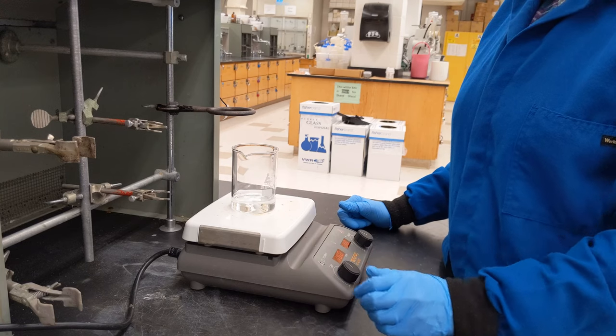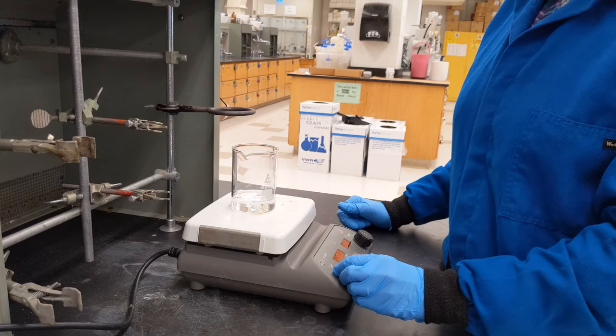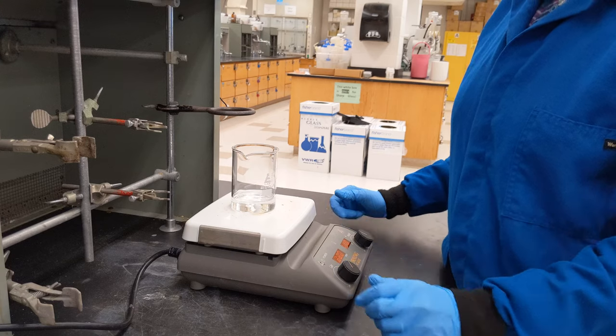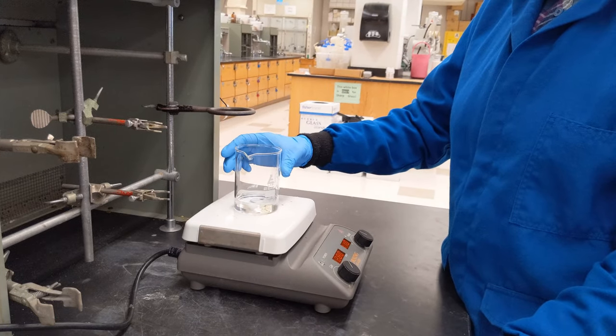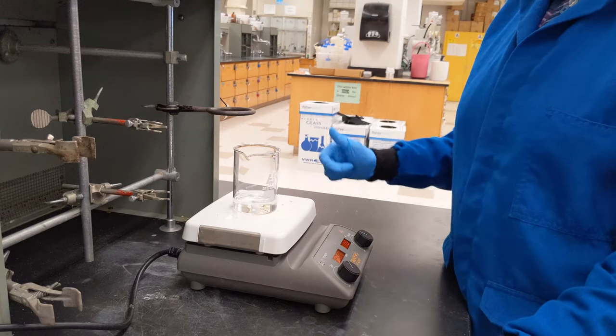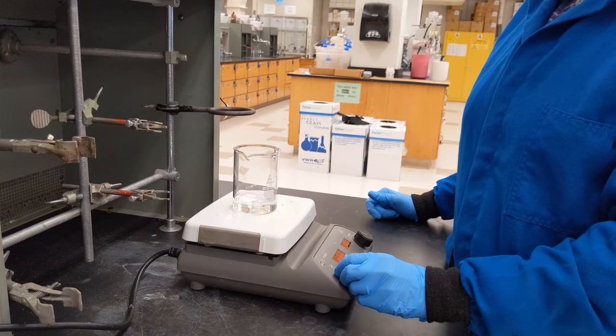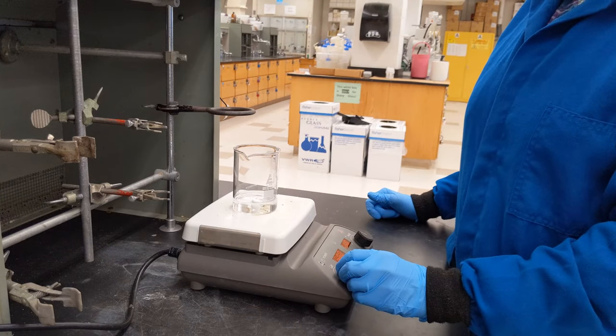There's a magnet inside of the hot plate that actually spins when I turn on the spin function. In order for this to work effectively, I need to make sure that my piece of glassware is centered because the stir function is going to occur right in the center.